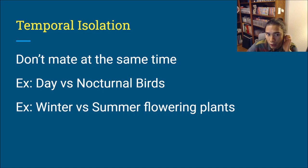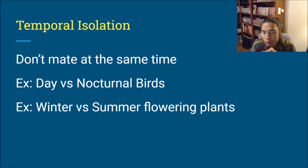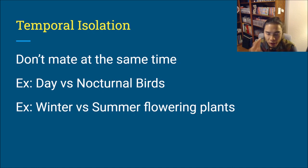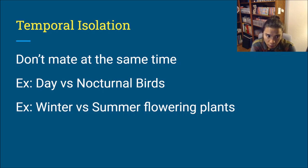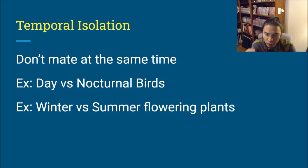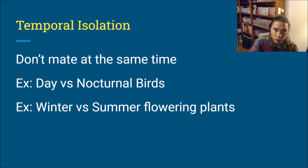Temporal isolation: they don't mate at the same time. This could be day versus nocturnal birds — birds active during the day and birds active during the night would never meet, so they never reproduce and never produce a zygote. Another example is winter versus summer flowering plants — they bloom at different seasons, and whenever they bloom they're reproductively active, so if they're never around at the same time that reproduction doesn't happen and the zygote is not formed.